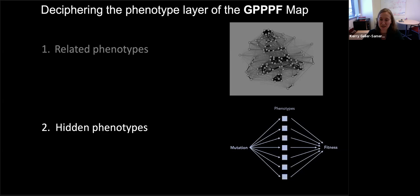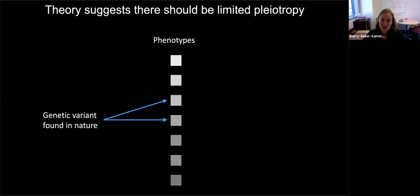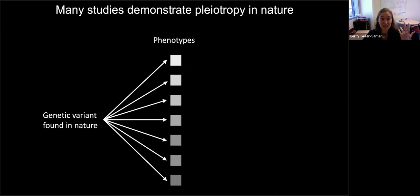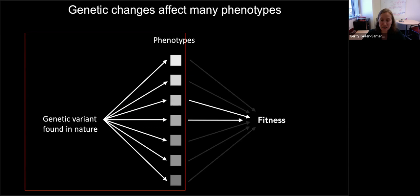The second project is something I worked on with Grant Kinsler and Dmitri Petrov at Stanford University. Like the first project, it started focusing on pleiotropy and the debate that evolutionary theory suggests pleiotropy should be limited, but the data suggests pleiotropy is everywhere. To make sense of this mismatch between theory and observation, what we did is add the fitness layer back to the genotype-phenotype-fitness map, to formalize ideas about context dependence. In this model, it's totally okay if a genetic variant is super pleiotropic and affects many phenotypes, as long as not all of those phenotypes contribute to fitness in a given context.